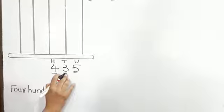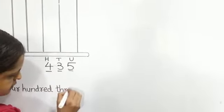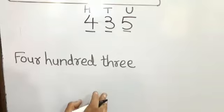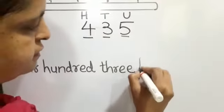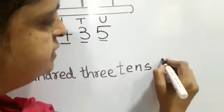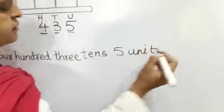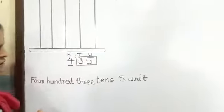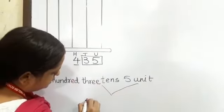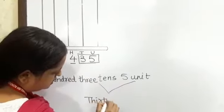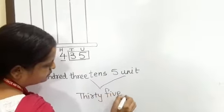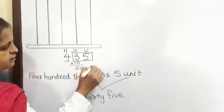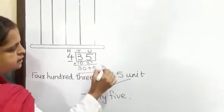Then the next number is 3, so write 3. 3 means tens — 3 times. And 5 is the unit. We call these two numbers together, so we write it as 35. If you expand it, it will be 30 plus 5, which is also 35.